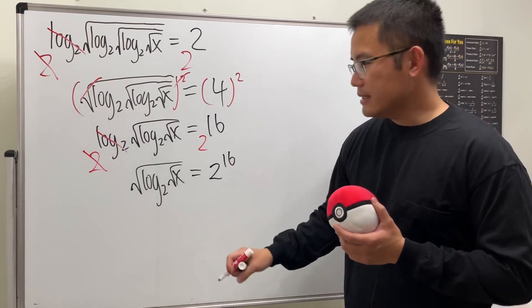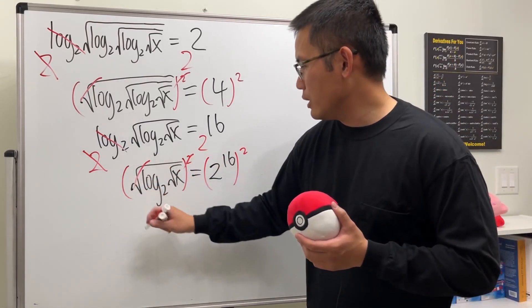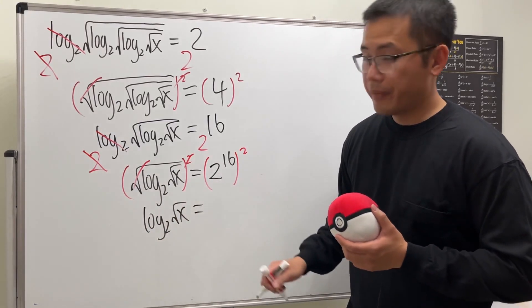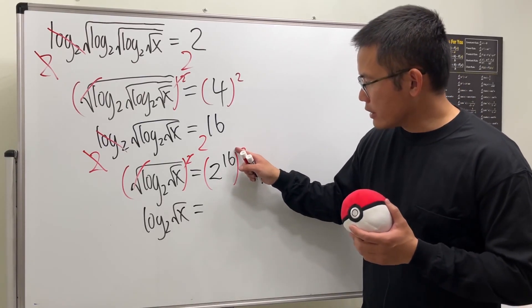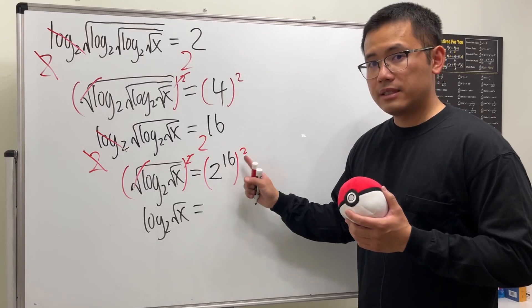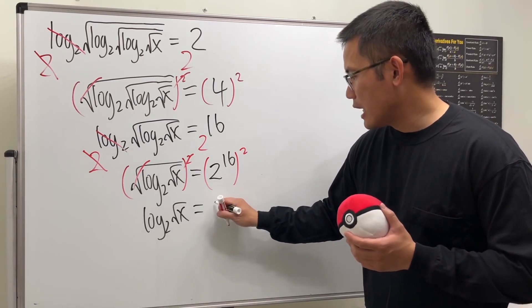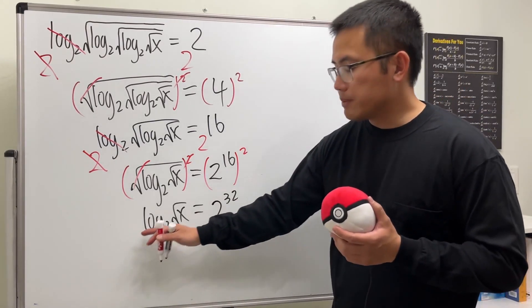Next we do the second power on both sides. They cancel so we have log base 2 of square root of x. And that's equal to, now check this out, when we have this to the power we do not put the power on the top. In fact we just multiply the 16 with the power 2. So 16 times 2 is 32, so this right here becomes 2 to the 32nd power.